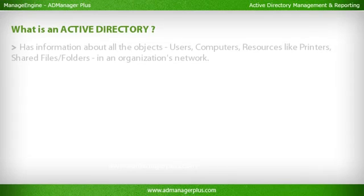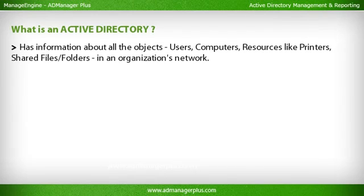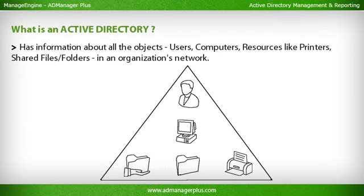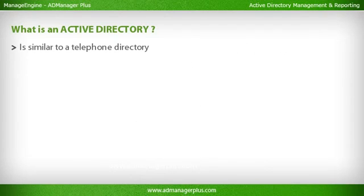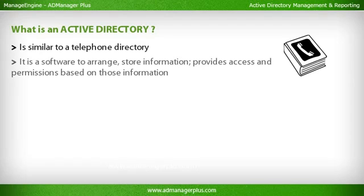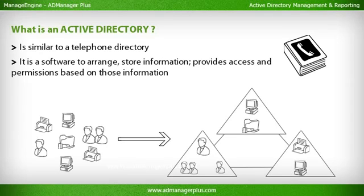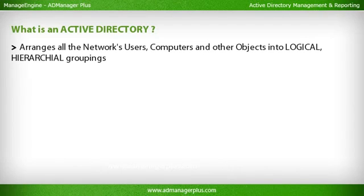What is an Active Directory? It has information about all the objects — users, computers, resources like printers, shared files, folders — in an organization's network. It is similar to a telephone directory. It is software to arrange and store information, and provides access and permissions based on that information. It arranges all the network's users, computers, and other objects into logical, hierarchical groupings.